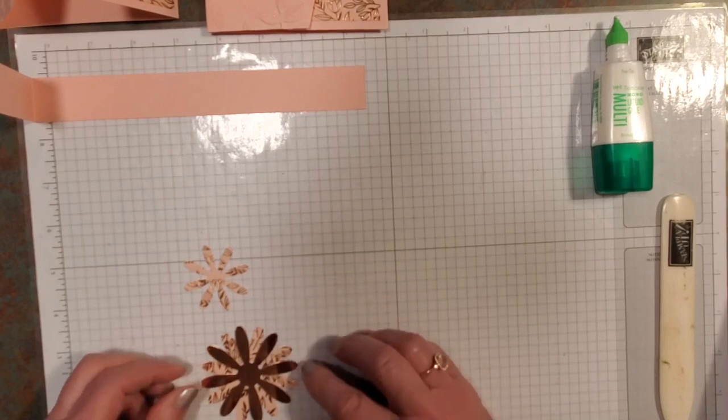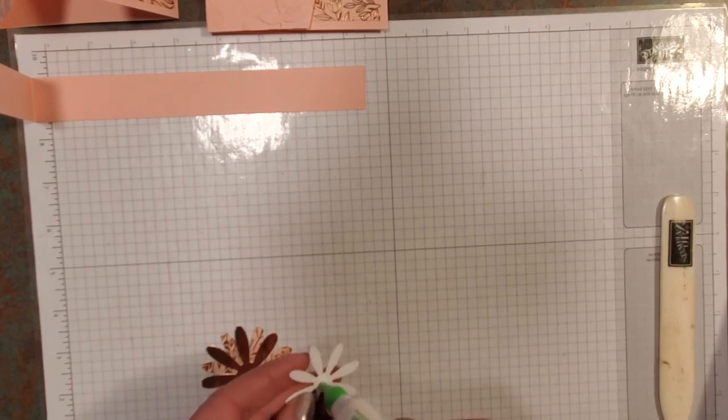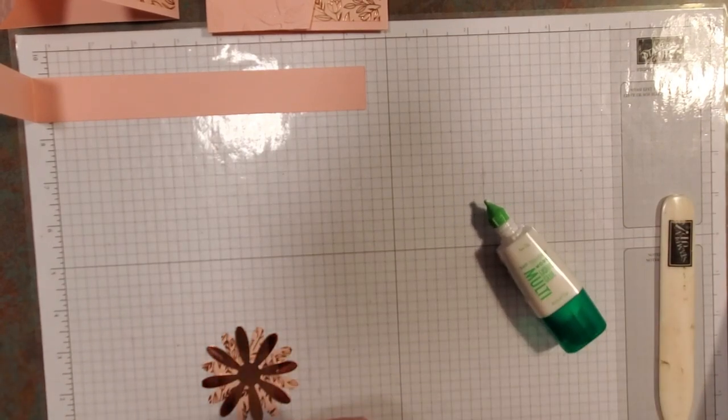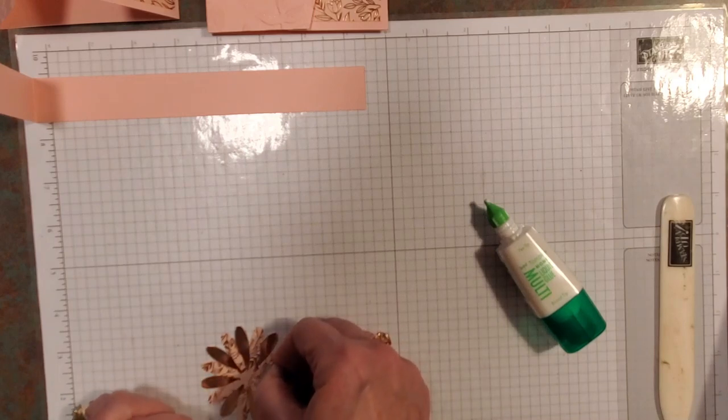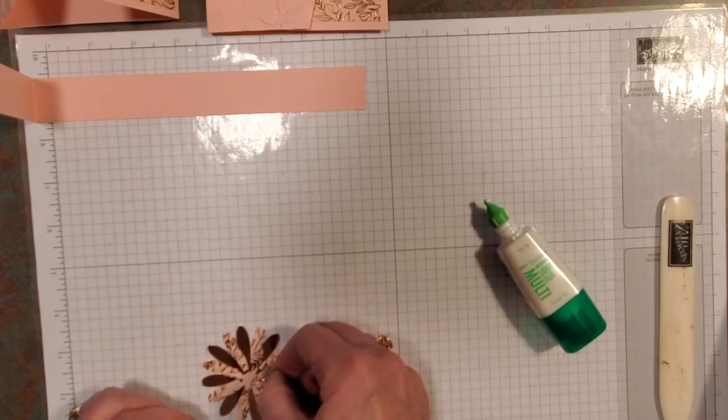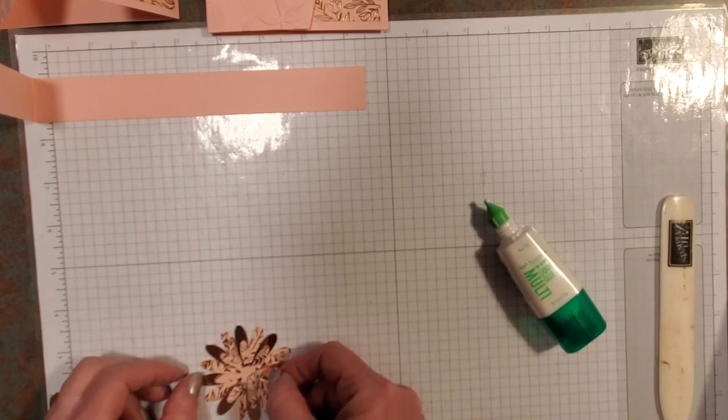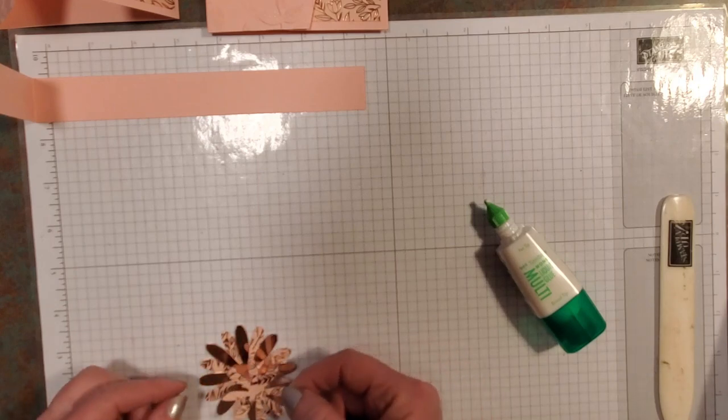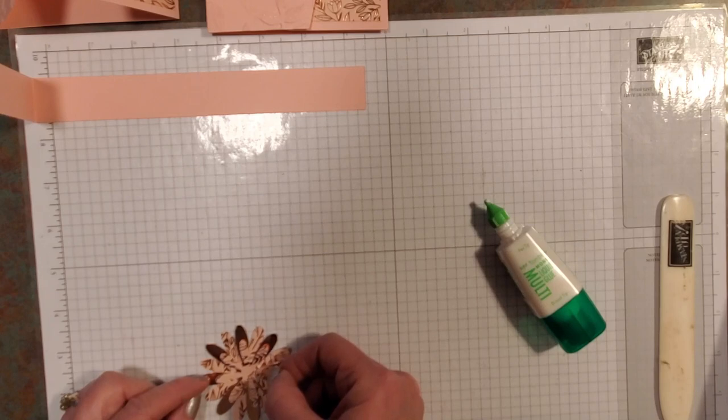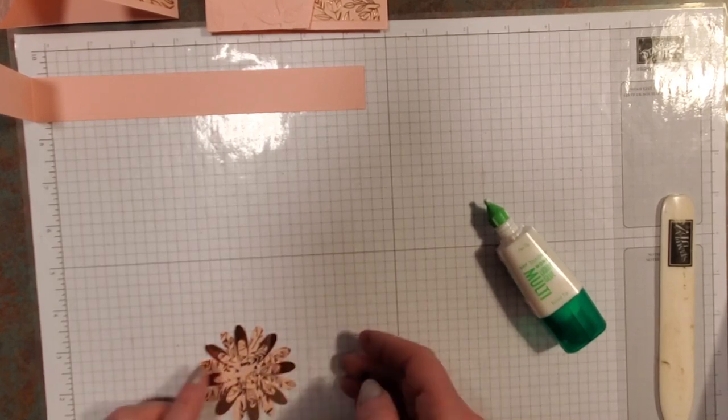All right. I'm going to move that out of the way, and we're going to work on the belly band now, which is much simpler. So, the belly band, we're going to take this, and we're going to make it one inch. And then, we're going to make it one inch by ten. So, I know that this is eight and a half by eleven, so what I'm going to do is just cut an inch off.